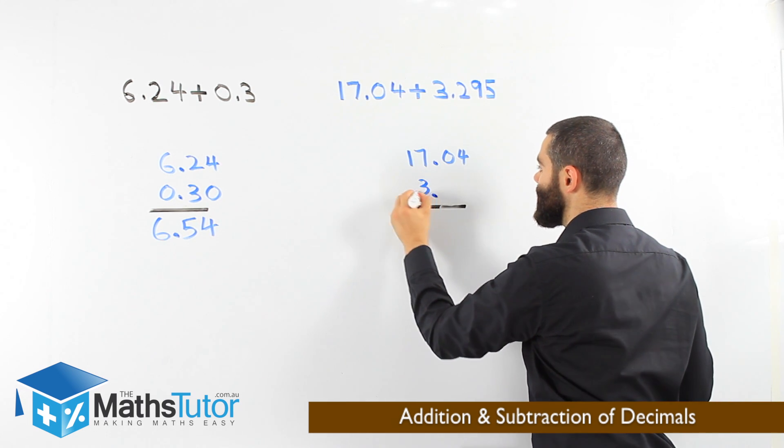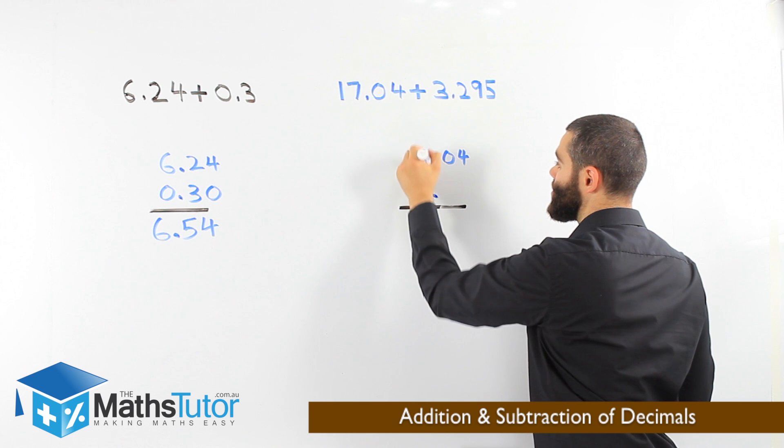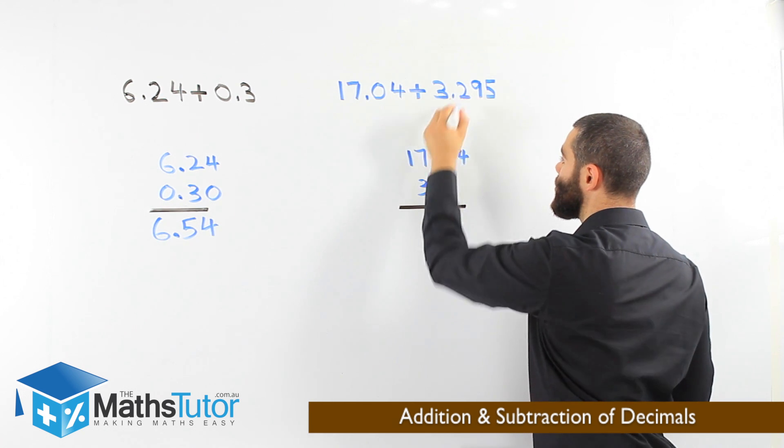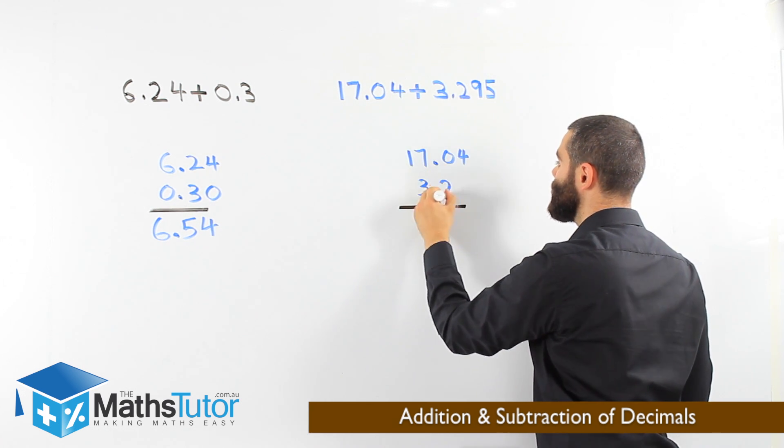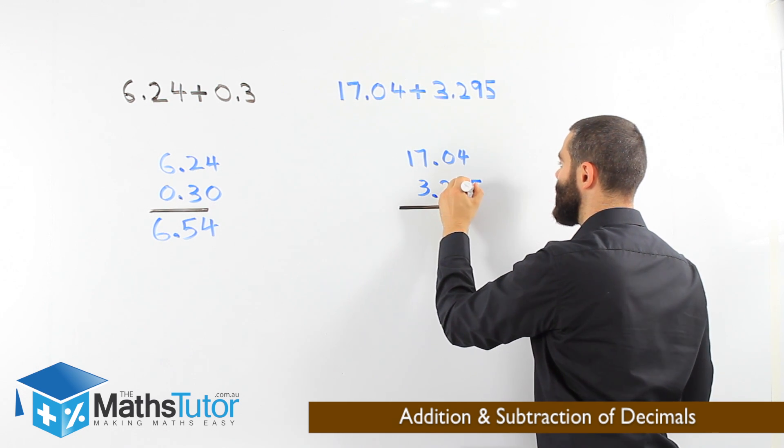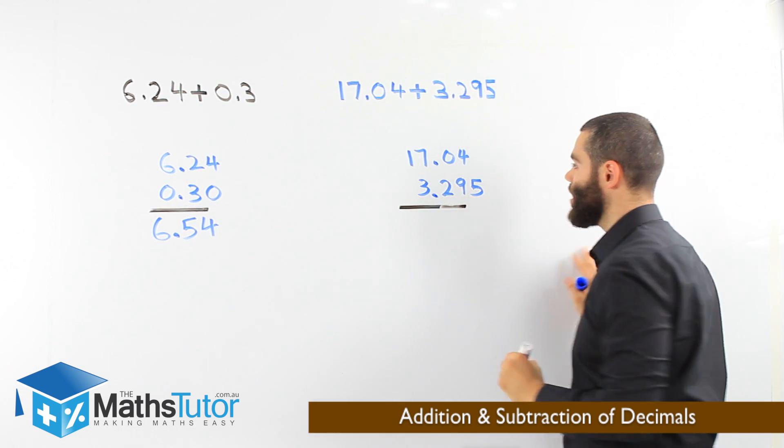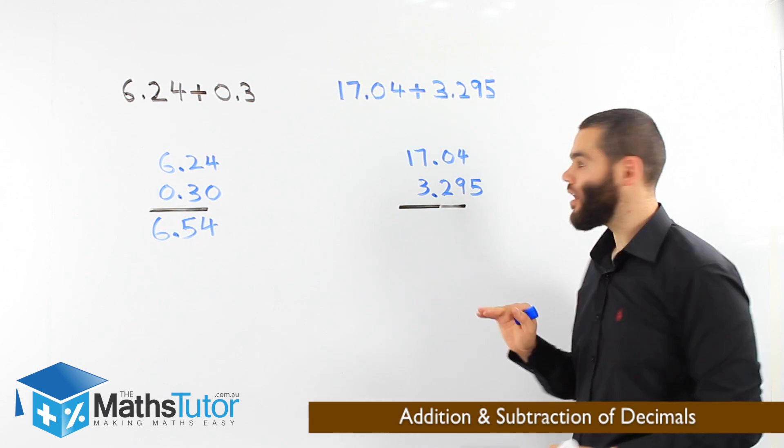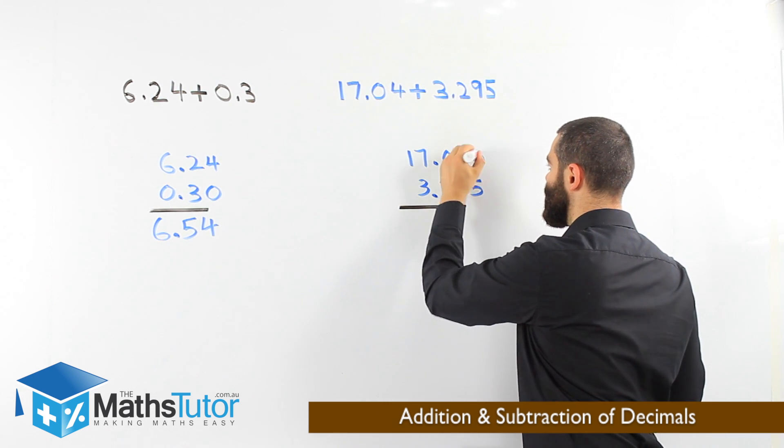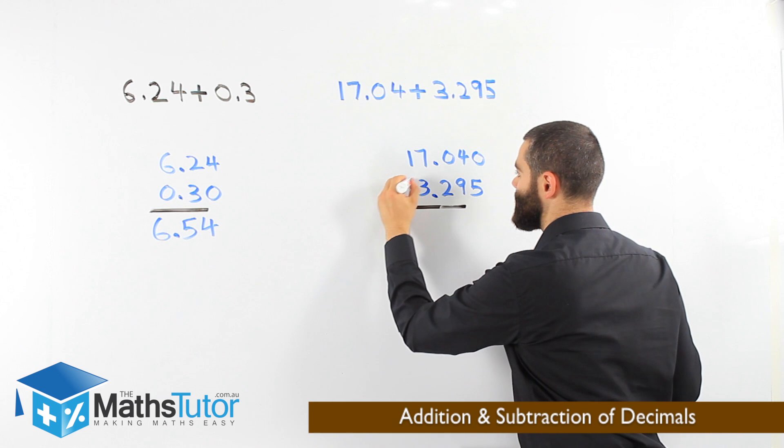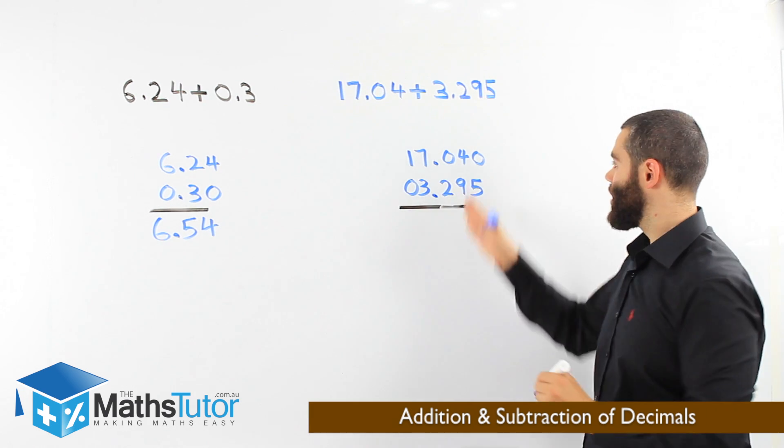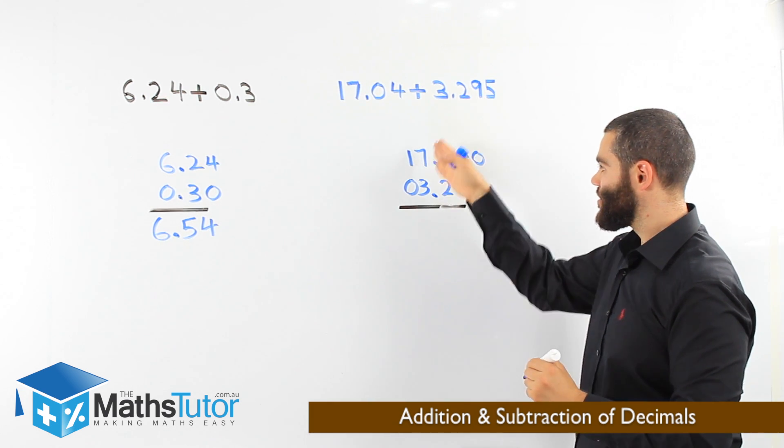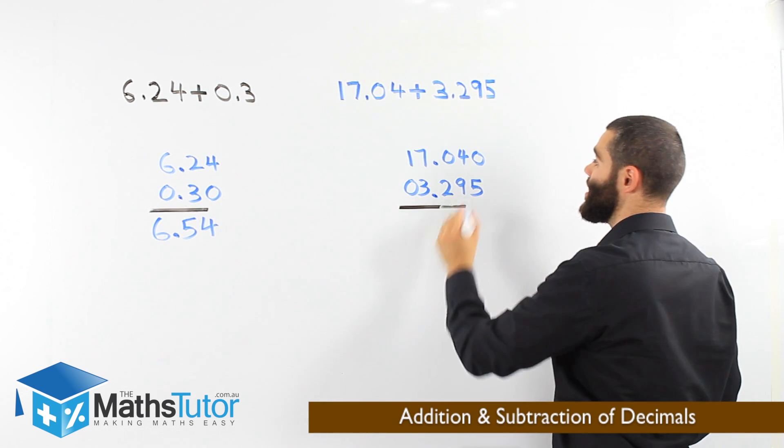The 3, there it is, because it's in the units column, or the ones column. Then we have our 2, our 9, and our 5. As you can see, we have everything aligned. We put a 0 here, and we put our 0 here to make sure that everything else is aligned. It's all under each other. Perfect. Let's start.